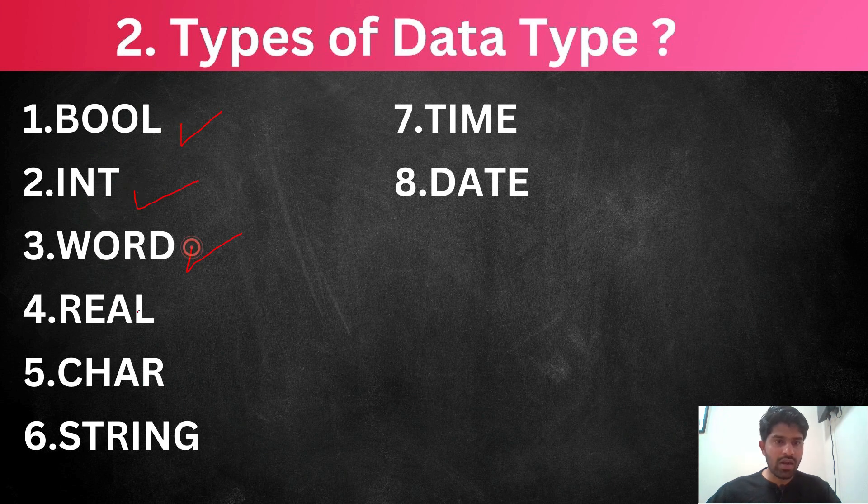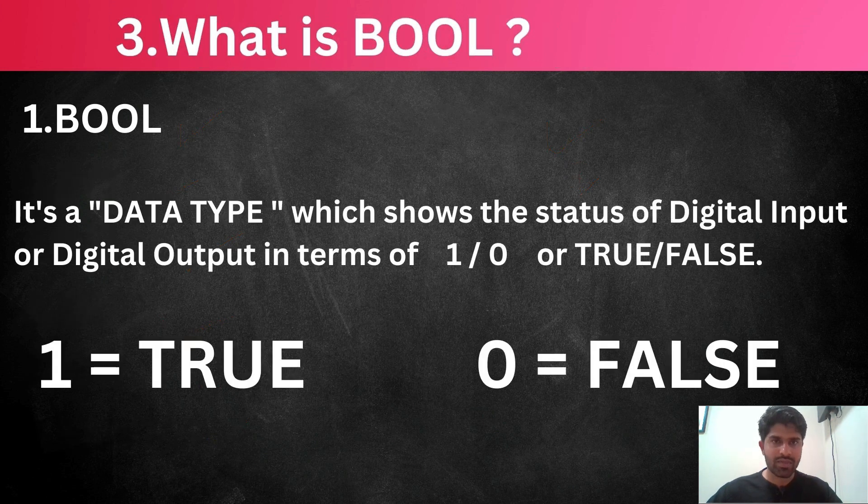And then what are the different types of data type? Boolean, int, word, real, character, string, time and date. These are the main, very important data types.